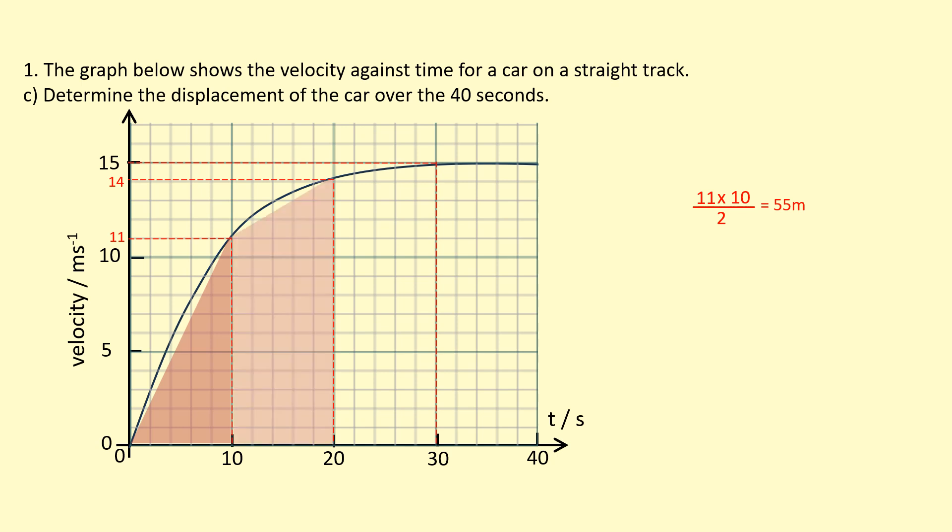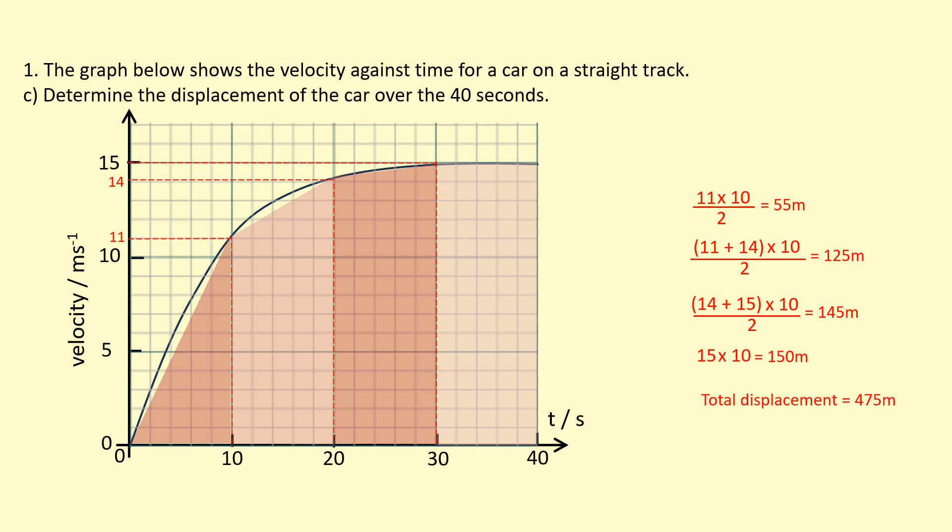Then we have a trapezium, so that's going to be 11 plus 14 times 10 divided by 2, so that gives me 125 meters. Repeat this again for the next trapezium, that's 14 plus 15 times 10 divided by 2, that's 145 meters. And finally, the last section, I'm going to use that as a rectangle, so that's just 15 times 10, and that gives me 150 meters.